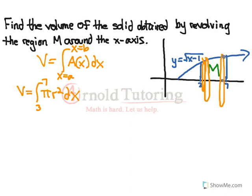That height is y, which is the square root of x minus 1. Therefore, that's our radius. It becomes the integral from 3 to 7 of pi times the square root of x minus 1 squared, dx. We square it because the radius is squared in the area formula.